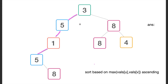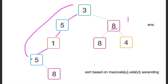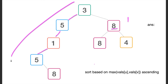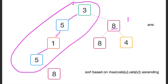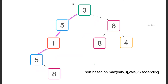Next we add an edge with maximum value 8. Before adding, we check the two connected components. The max of the two endpoints is 8. One connected component has a frequency of one 8, and the other connected component has no 8s. So we don't update our answer and just add the edge.